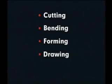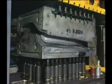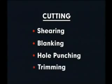Basic die operations include cutting, bending, forming, drawing, and squeezing. The two most common types of dies, however, are cutting dies and forming dies. Cutting — which includes shearing, blanking, hole punching, and trimming — is the most common press working operation using dies.